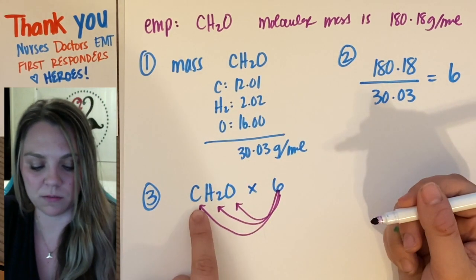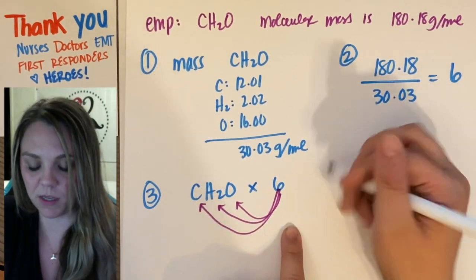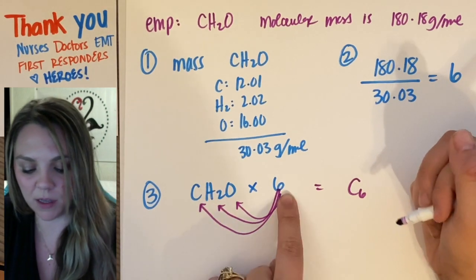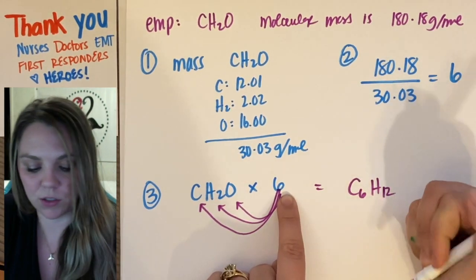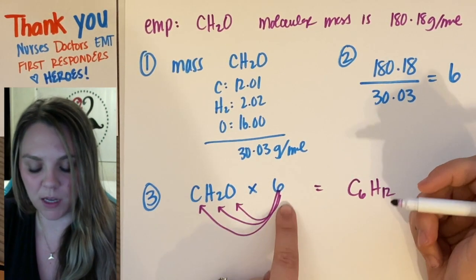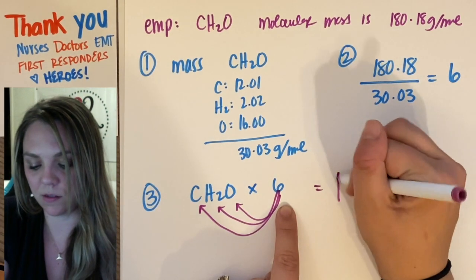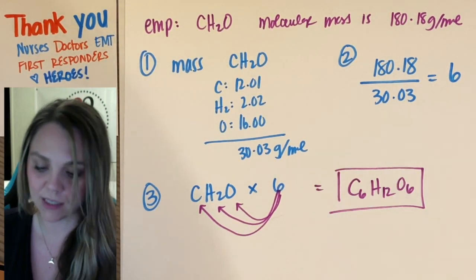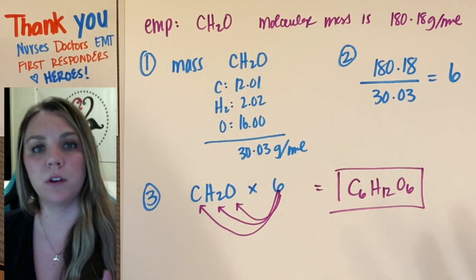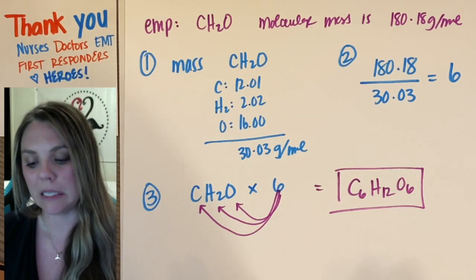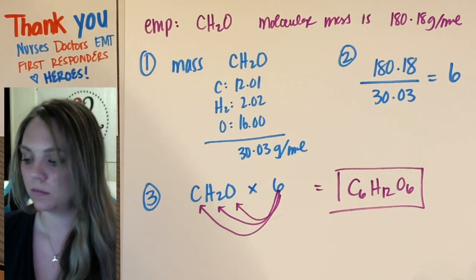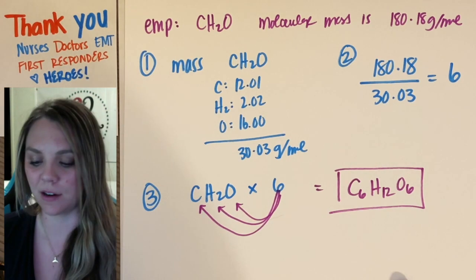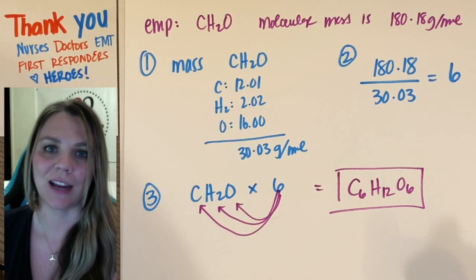So C1 becomes C6, H2 becomes H12, and O1 becomes O6 — a.k.a. glucose. So that's it. That's how you go from empirical to molecular. Easy. I have another example, but you know how to do it. Good luck.